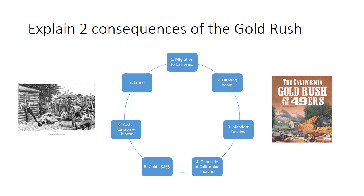Finally, many new mining settlements had no law and order — no sheriffs. As the picture shows, law and order was often set by vigilante groups — the man pictured is about to be lynched with no judge or jury. That's the end of week two; we'll carry on with the American West next week.